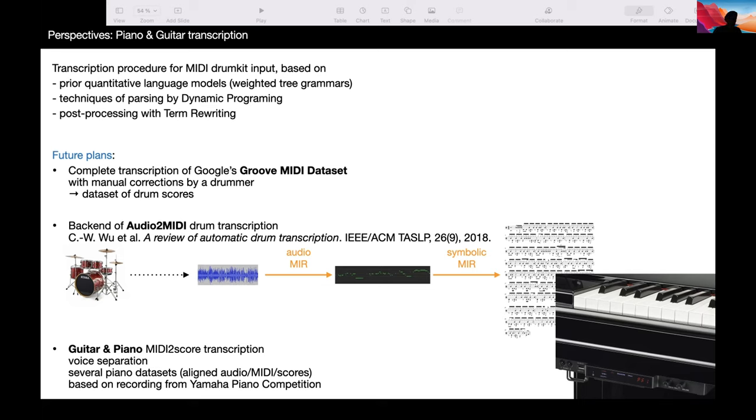Our perspectives for this work is to first, obviously to transcribe more scores of the Groove MIDI dataset, ideally the whole dataset, with correction by a professional drummer, manual corrections and analysis. This would give a whole dataset of drum scores that would be useful for the evaluation of other tasks, even for OMR for instance.